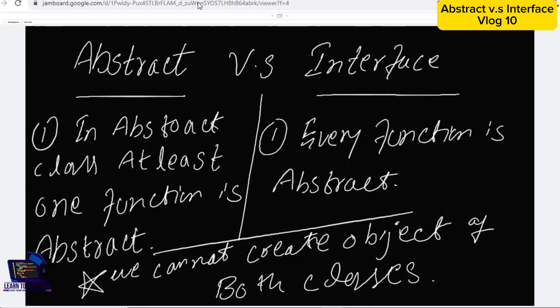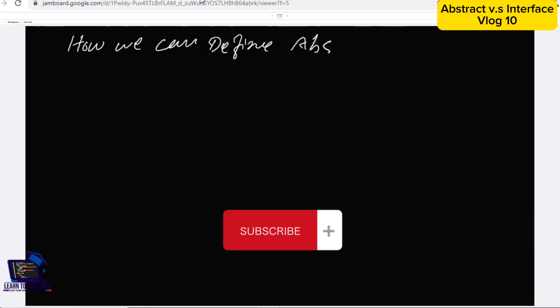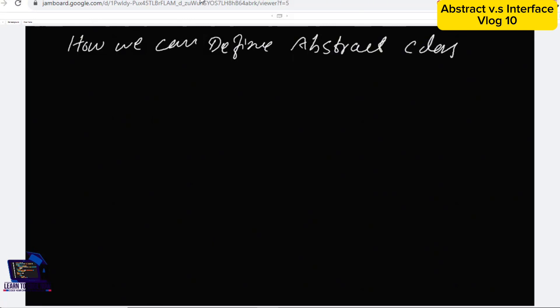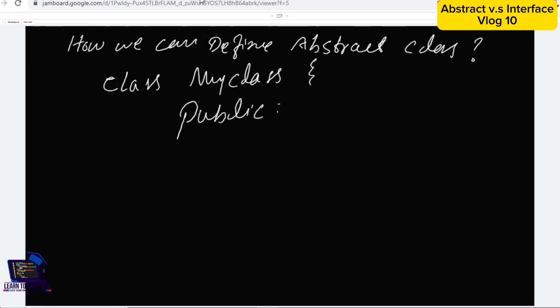You can see we cannot create an object of both classes. After this, we will see a little sample code for creating an abstract class. Here you can see how we can define an abstract class — it's a basic simple code to understand how we can define an abstract class.